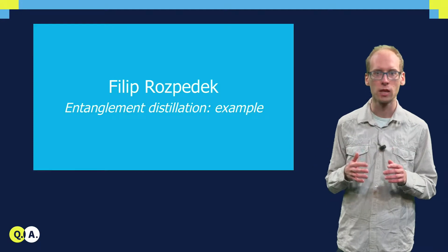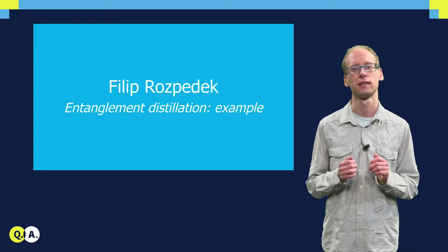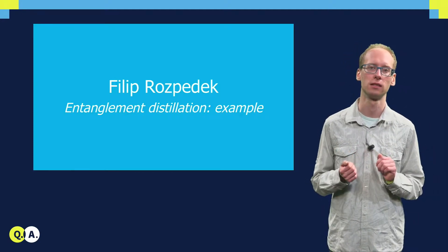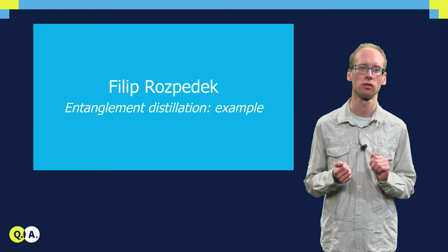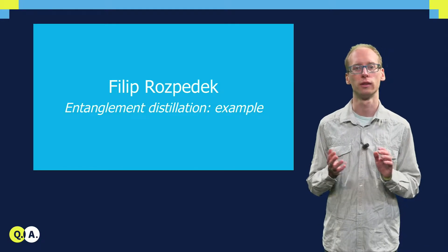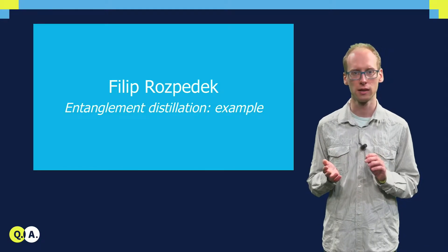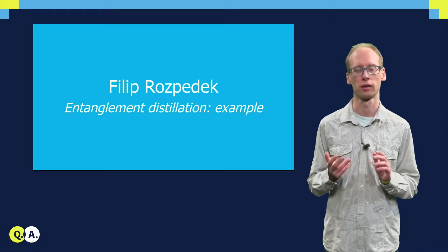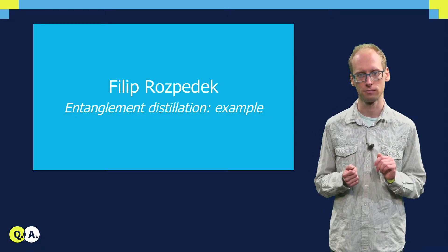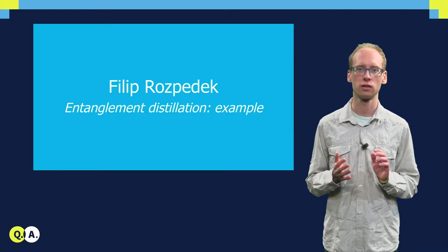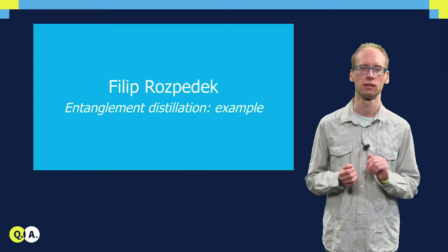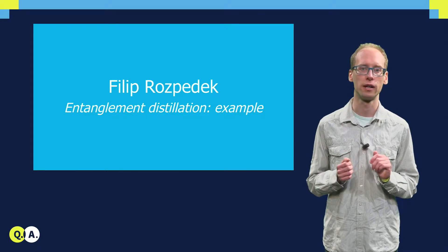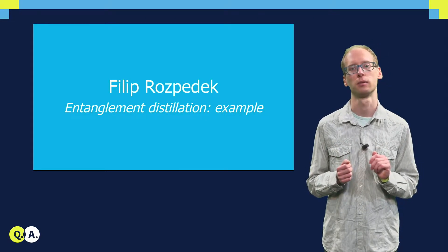In this video we will discuss an example class of very common entanglement distillation protocols, which operate on two entangled copies and aim at extracting a single more entangled copy. We will then also consider a specific distillation procedure from this class, used to deal with a very particular type of errors.